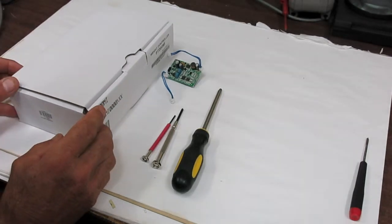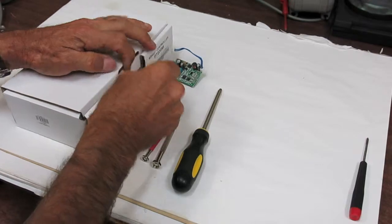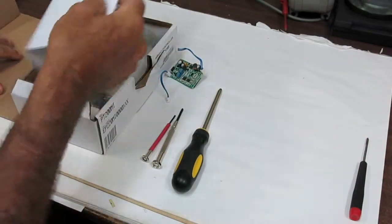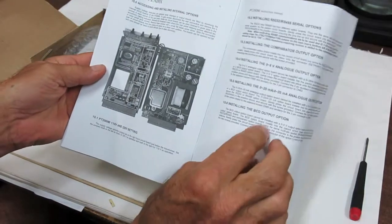Fitting the analogue option to the PT200MI, open the display. The instructions are in the manual, appendix 10.